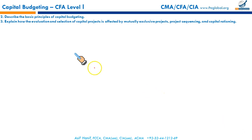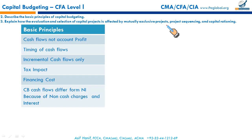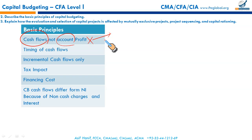The next two learning outcomes are: describe the basic principles of capital budgeting, and explain how evaluation and selection of capital projects is affected by mutually exclusive projects, project sequencing, and capital rationing. In NPV and IRR capital budgeting processes, we consider cash flows — not accounting profits — because accounting profits are heavily influenced by accounting conventions, standards, and reporting requirements. We need cash flows to assess the viability of projects.